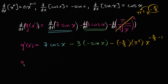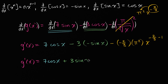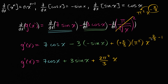So we get g prime of x is equal to seven cosine of x. And we have negative three times negative sine of x, so that's a positive three sine of x. Then we're subtracting a negative, so that's a positive — plus two pi squared over three, times x to the negative five-thirds power. And there you have it. We were able to tackle this thing that looked a little bit hairy, but all we had to use was the power rule and what we knew to be the derivatives of sine and cosine.